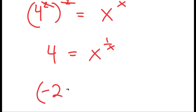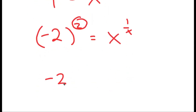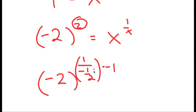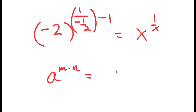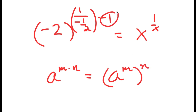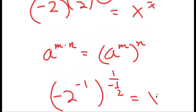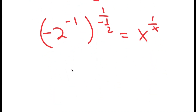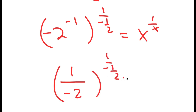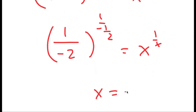Now, 4 is the same thing as negative 2 squared, and the exponent 2 I can rewrite as 1 over negative 1 half times negative 1. If I have something in the form a to the power of m times n, this is equal to a to the power of m to the power of n, so this negative 1 moves to be an exponent of negative 2. So I get negative 2 to the power of negative 1 to the power of 1 over negative 1 half, which equals x to the power of 1 over x. And negative 2 to the power of negative 1 is 1 over negative 2, so my solution is x equals negative 1 half.